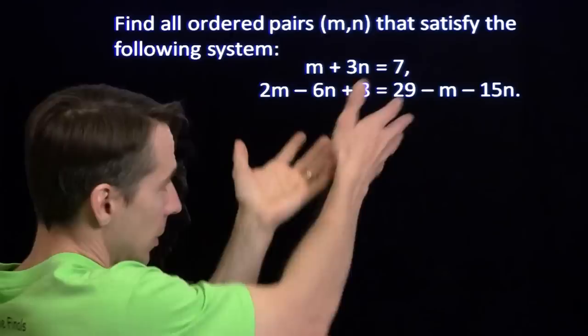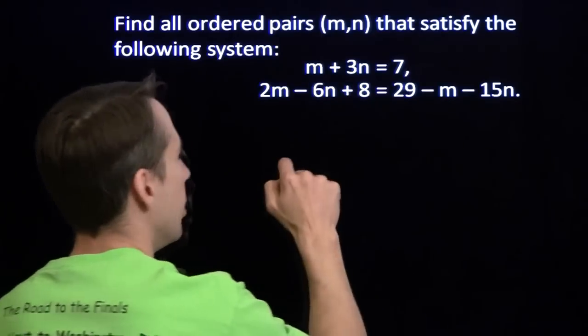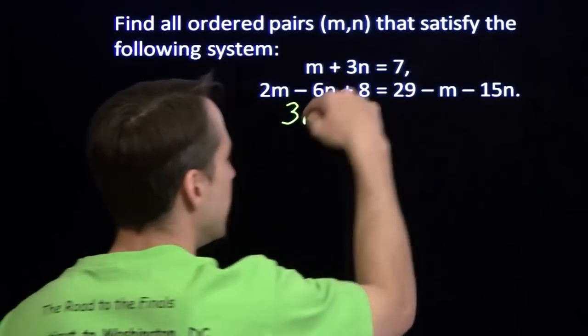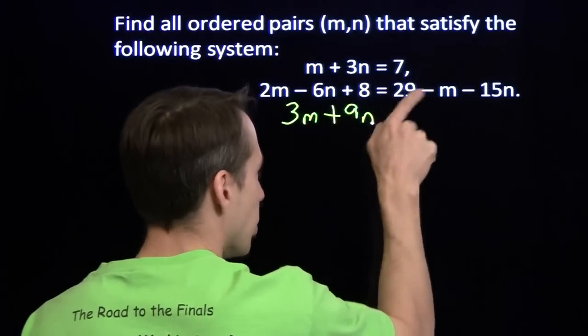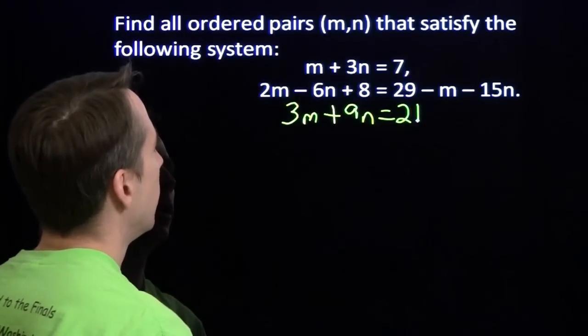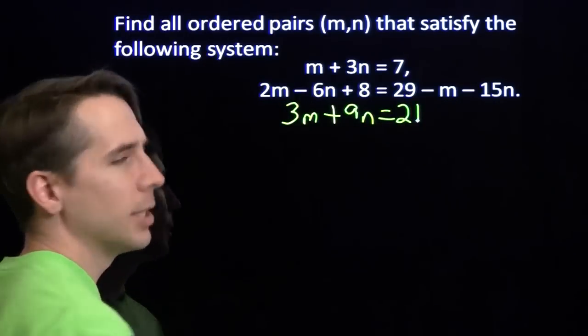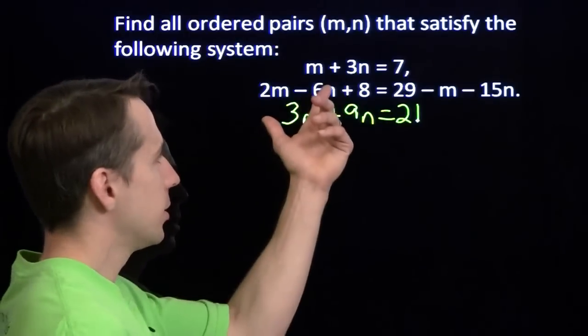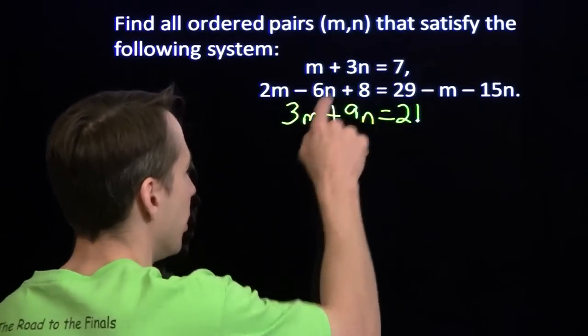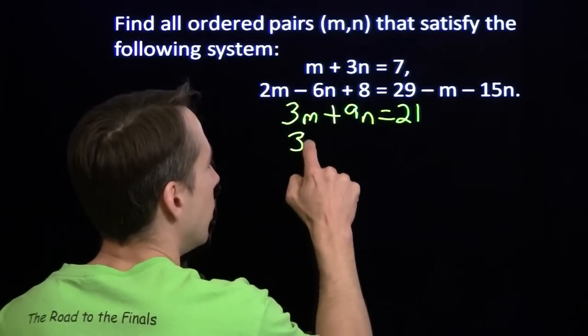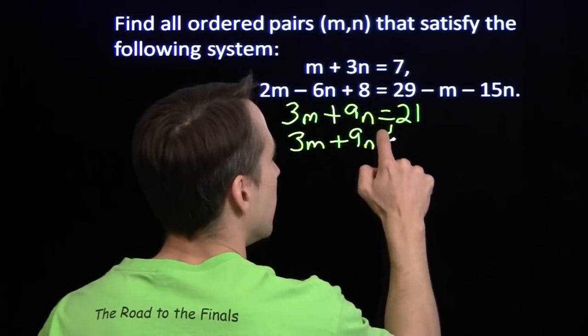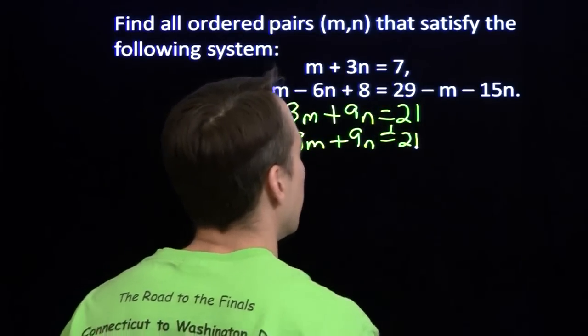Let's start from the top. Simplify this equation again. Add m to both sides, I got 3m. Add 15n to both sides, I did get 9n. I subtracted 8 from both sides, I got 21. Oh! Check this out. Now this equation, look what happens when I multiply by 3 instead of negative 3. If I just multiply this by 3, 3 times m plus 3 times 3n gives me 3m plus 9n. 3 times 7 is 21.